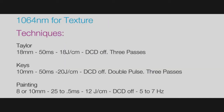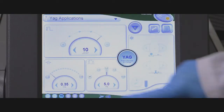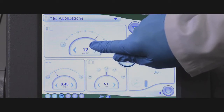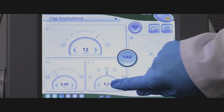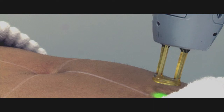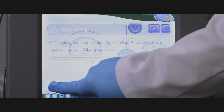Results can be achieved with two techniques: using a pulsing mode or using a painting mode. Both techniques can be used on all skin types. The DCD is turned off.